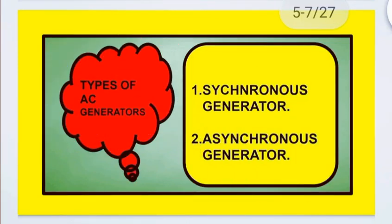Next, types of AC generators. AC generators are basically divided into two types: synchronous generators and asynchronous generators. Asynchronous generators are also called induction generators.